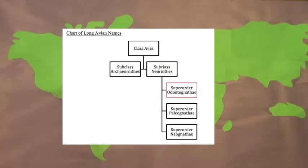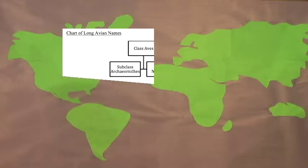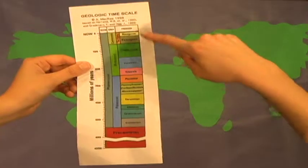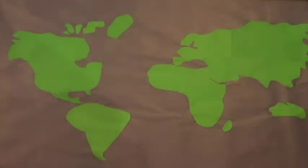Birds in the superorder Odontognathae are all extinct from the Cretaceous period and still held some reptilian features, namely being toothed.